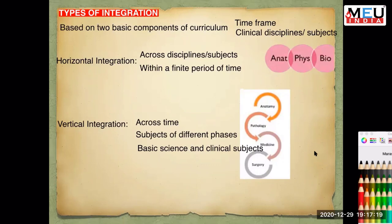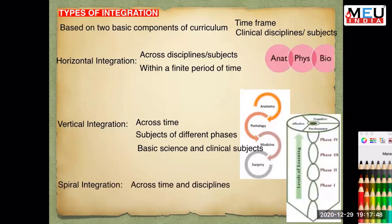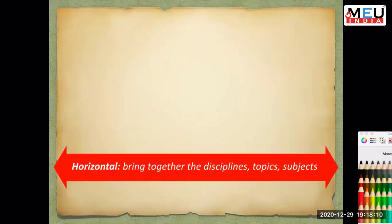Vertical integration is across the various phases, from basic sciences to clinical subjects. If we are talking of anatomy and involve a surgery faculty, we can give early clinical exposure, building the student's confidence and helping them consider which specialty to pursue. The third type combining both is spiral integration, where activities happen across time and disciplines together. In spiral integration, a natural progression from simple to complex subjects is taken and barriers between courses and departments are broken down.